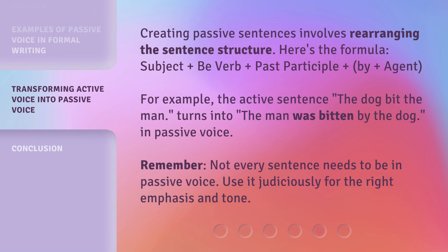Creating passive sentences involves rearranging the sentence structure. Here's the formula: Subject + be verb + past participle + by + agent. For example, the active sentence 'The dog bit the man' turns into 'The man was bitten by the dog' in passive voice.